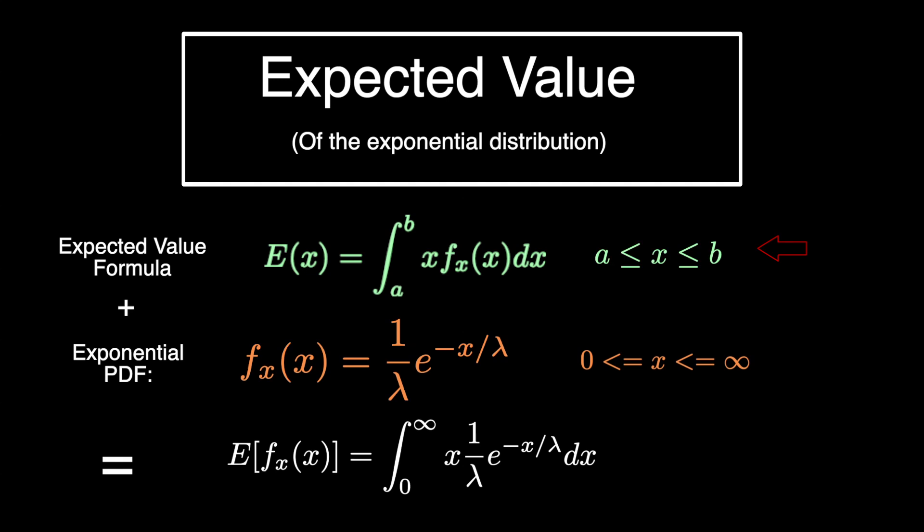Today we're going to walk through the steps to find the expected value of the exponential distribution. In green we have the definition for an expected value if it's a continuous distribution, and in orange we have our exponential PDF which we're going to plug into our definition for the expected value.